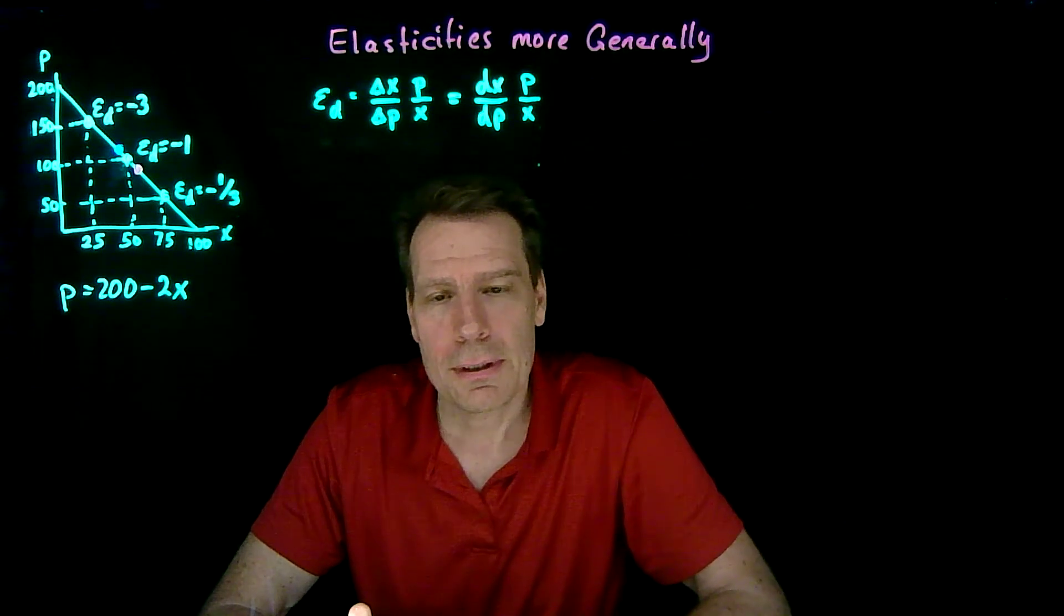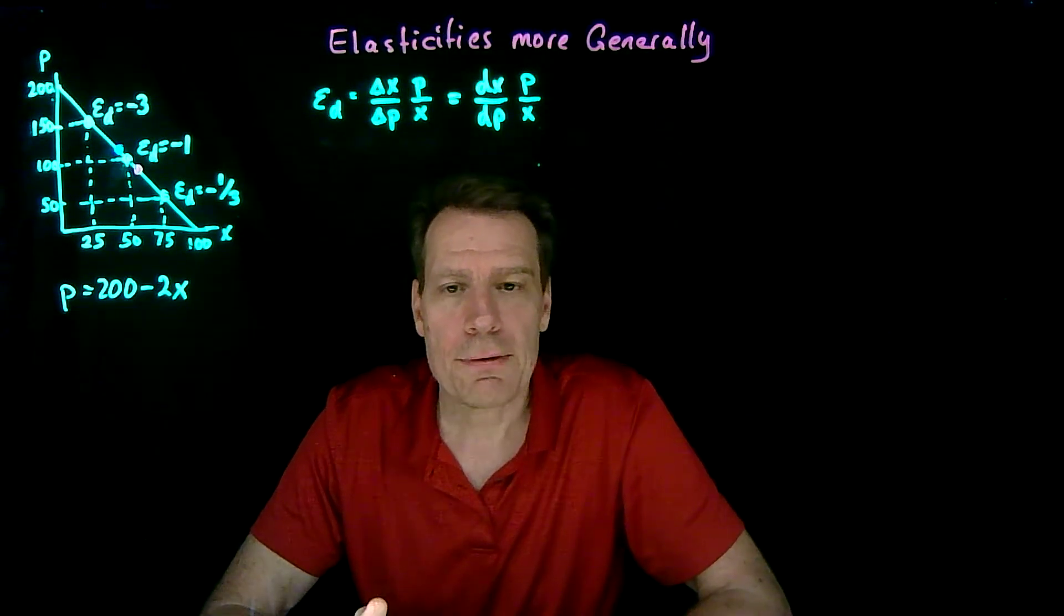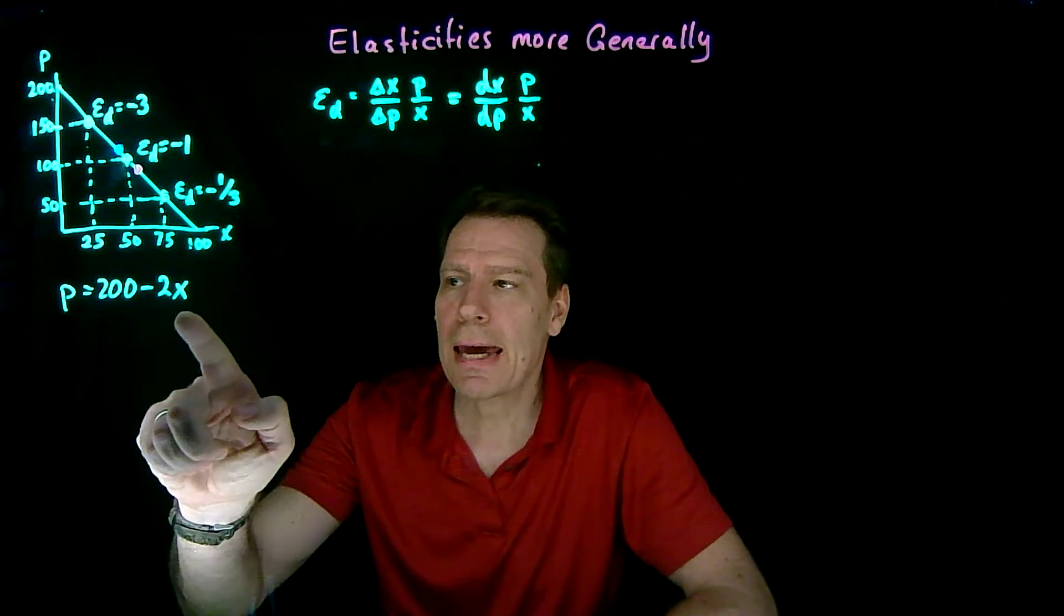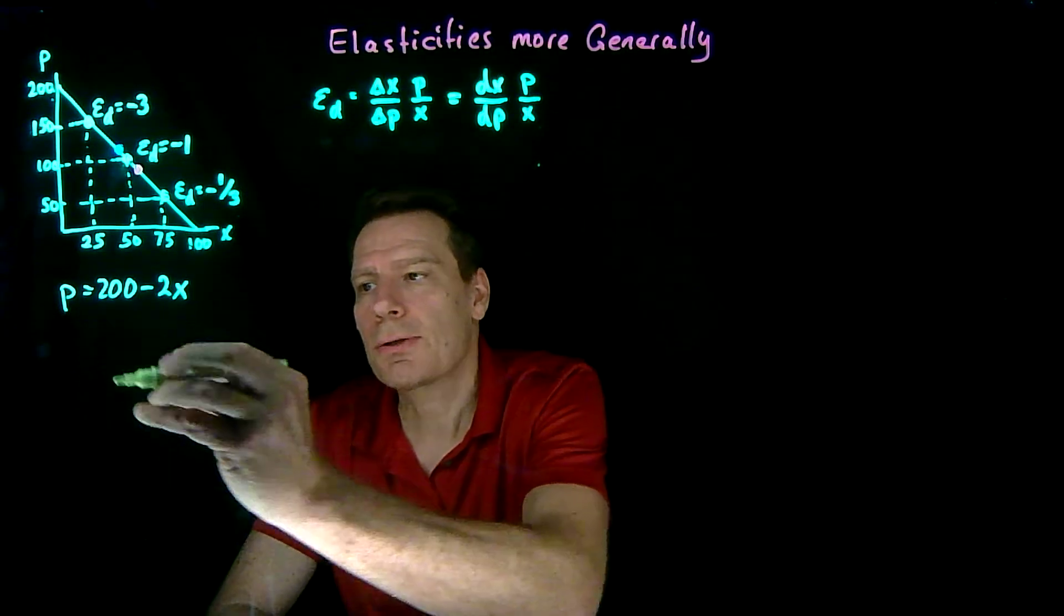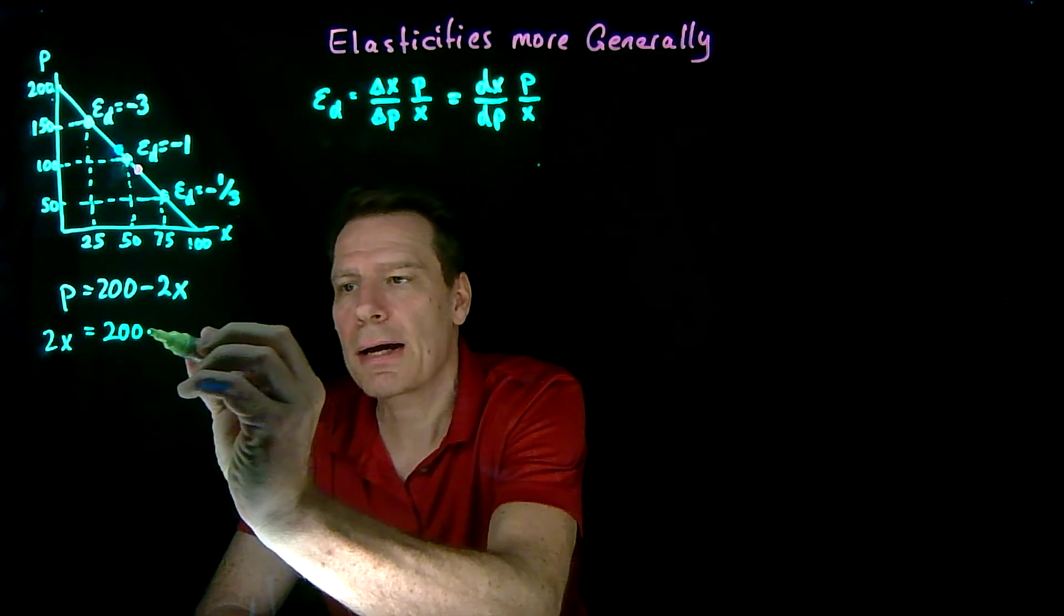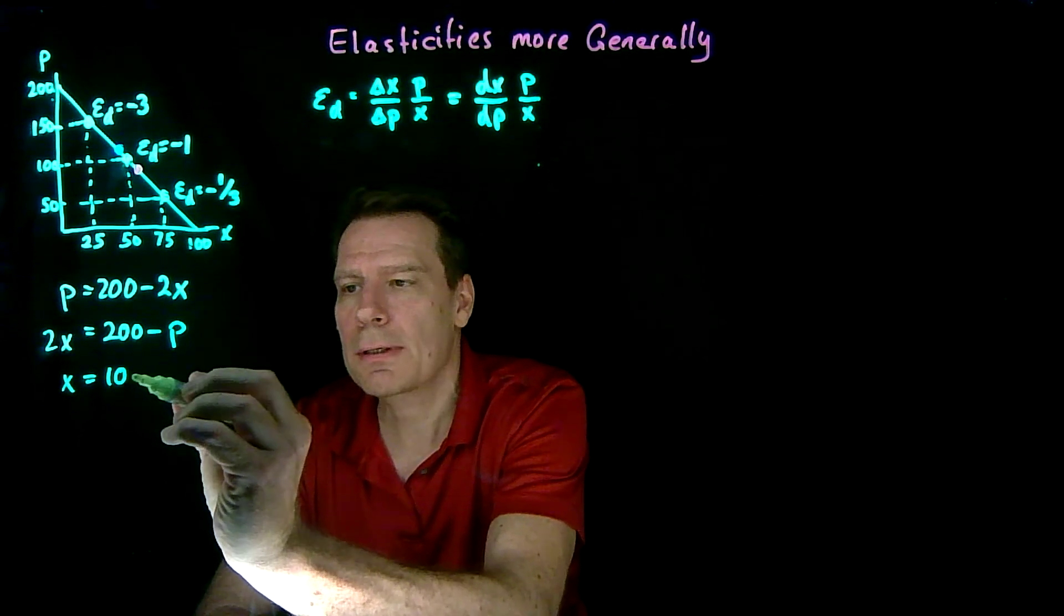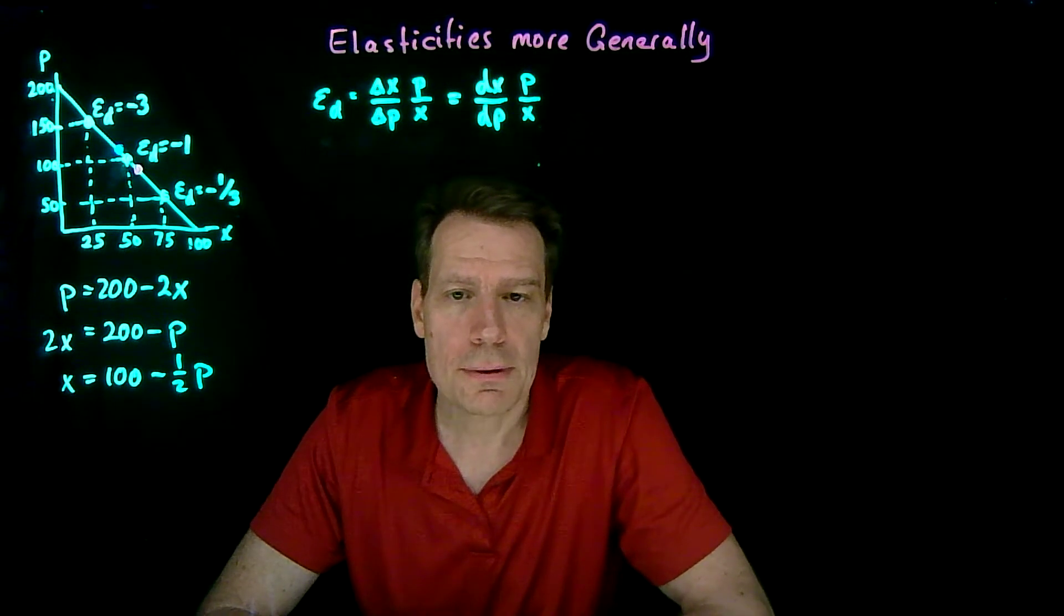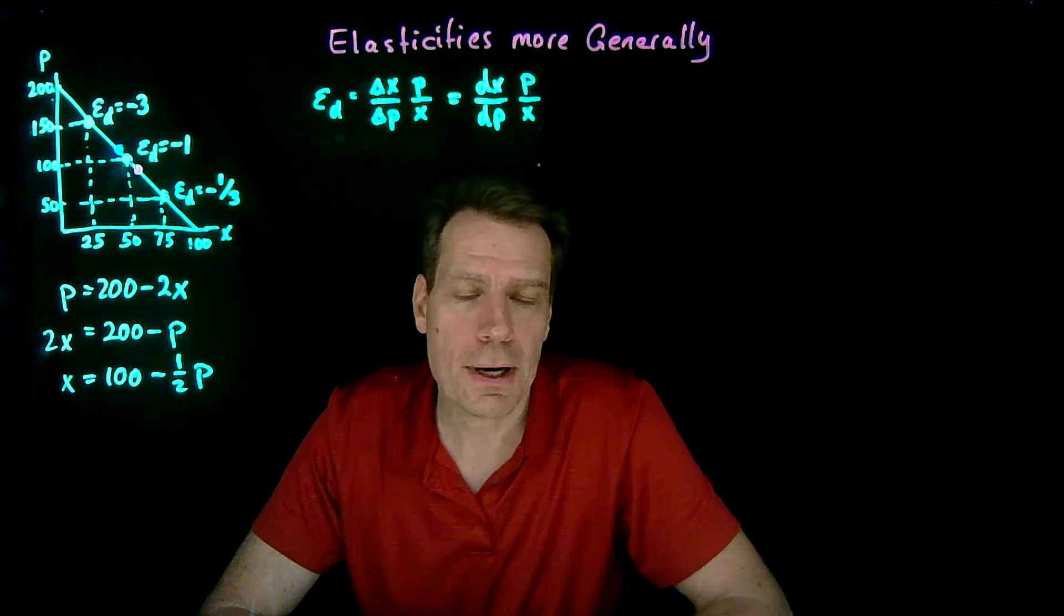Remember that the demand function and the demand curve are inverses of each other. A demand function tells us for any price how much of the good x we're going to consume. So we need to get x on the other side. We need to invert this. We can do that by just adding 2x to both sides, subtracting p from both sides to get 200 minus p, and then divide by 2, and we get x is equal to 100 minus 1 half p. Now we have a demand function, and so we can apply this formula for calculating price elasticities.